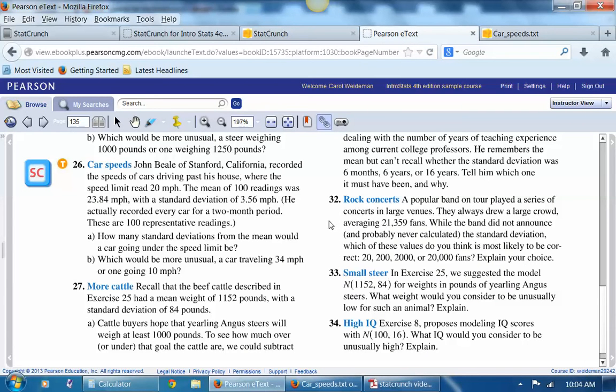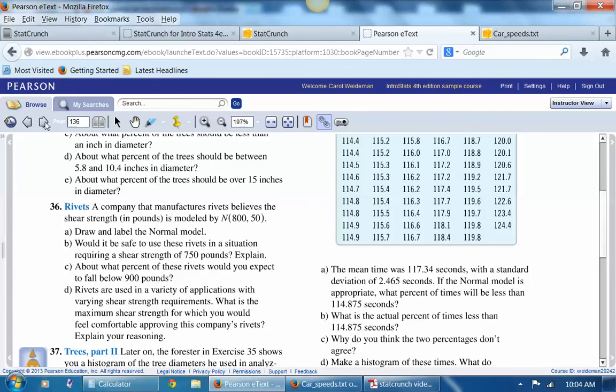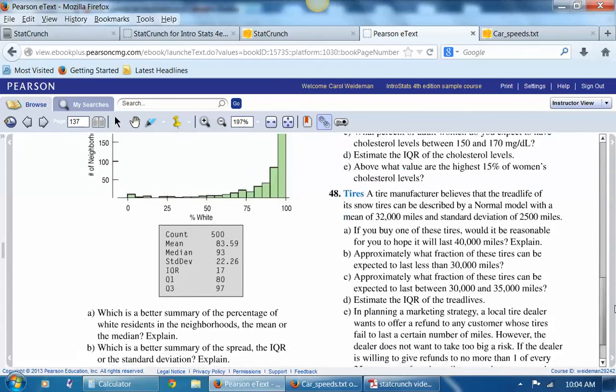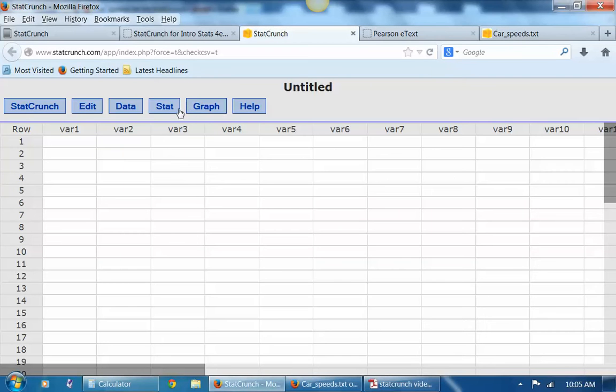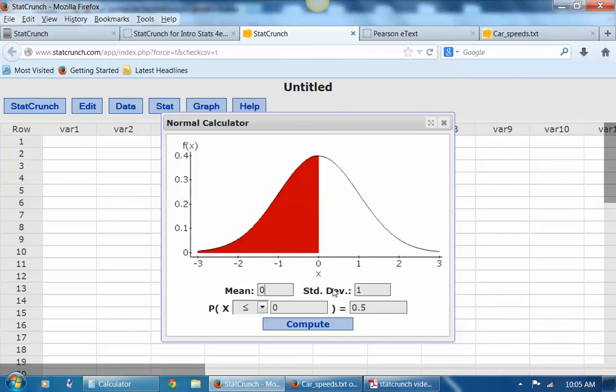And I wanted to do one additional problem, which was number 48, which is on the next page. And this is a problem about tires. Page 137, sorry. I'm going to use those tools again. We're talking about tires here. The tire manufacturer believes the tread life of the snow tires can be described by a normal model with this mean and this standard deviation. So let me jump over here to StatCrunch. Let's go ahead and pull up that normal calculator. We can enter that information because we know we're working with a mean of 32,000 miles and a standard deviation of 2,500 miles.